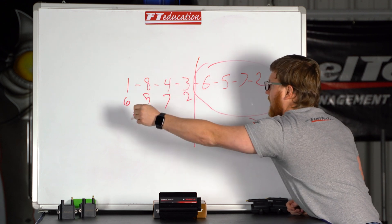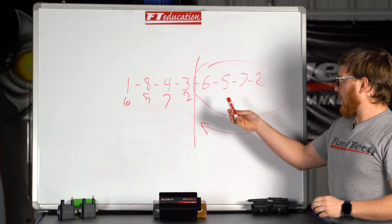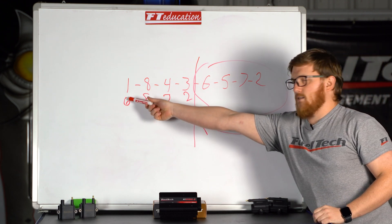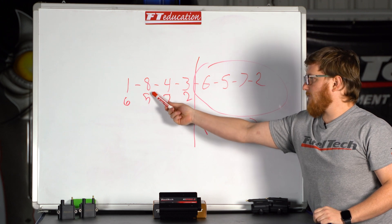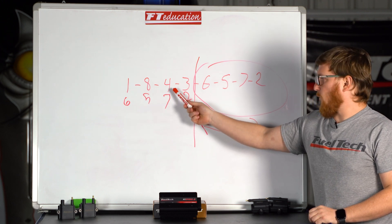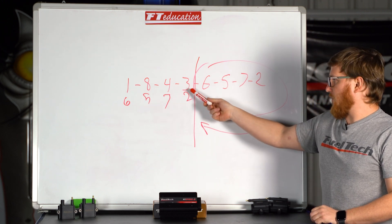So for instance, if you were doing the same firing order, it would fire one and six at the same time, eight and five at the same time, four and seven at the same time, and three and two at the same time.